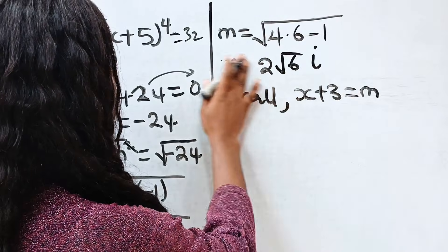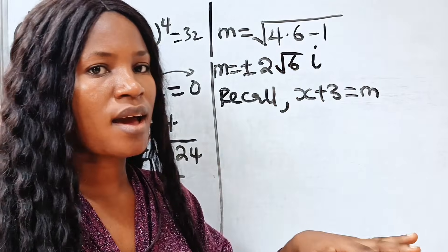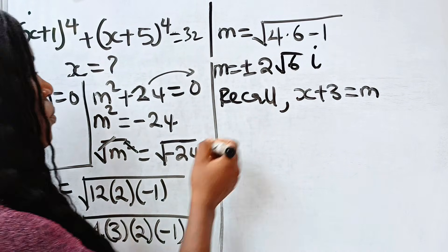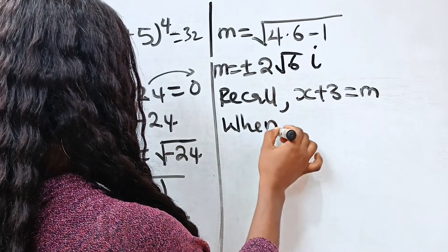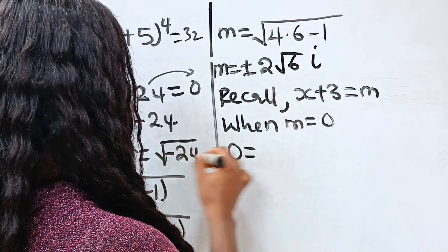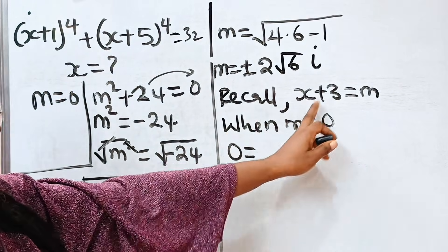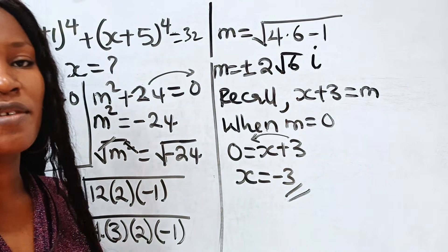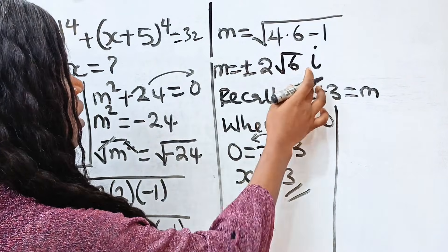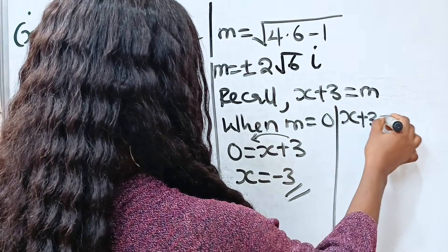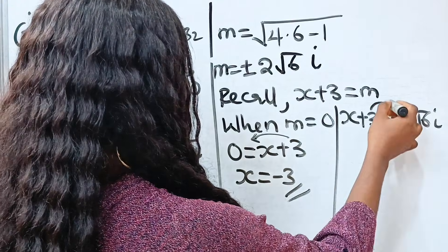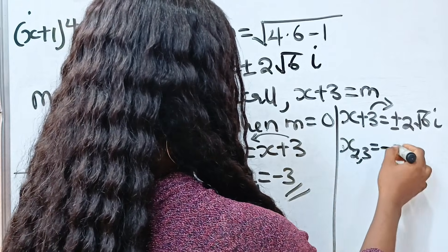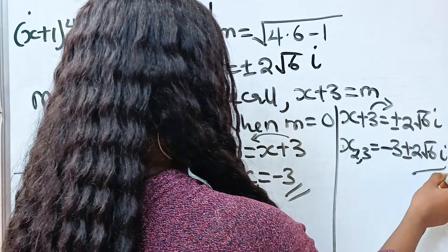Recalling that x plus 3 equals m: when m equals 0, we get x equals negative 3. For the complex solutions, x plus 3 equals plus or minus 2 root 6 i, so x equals negative 3 plus or minus 2 root 6 i. Thank you for watching. Bye.